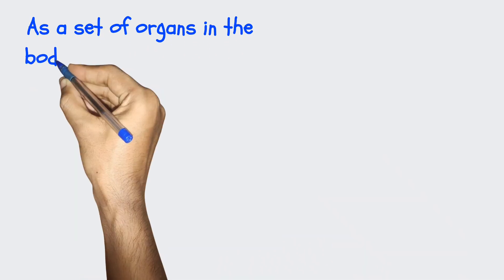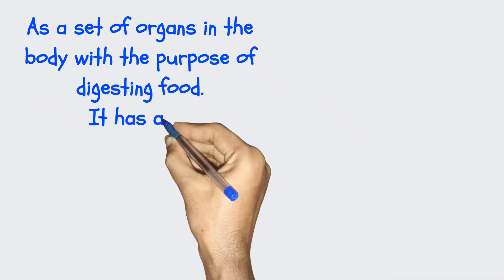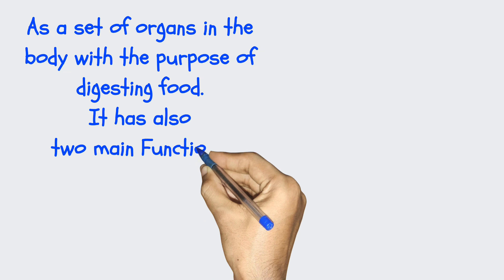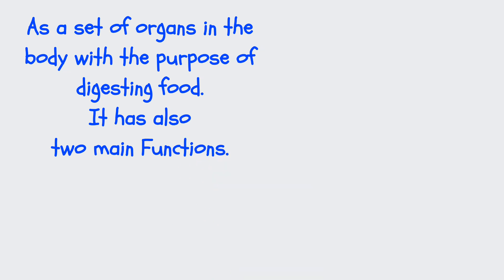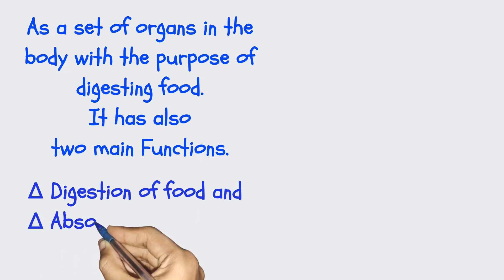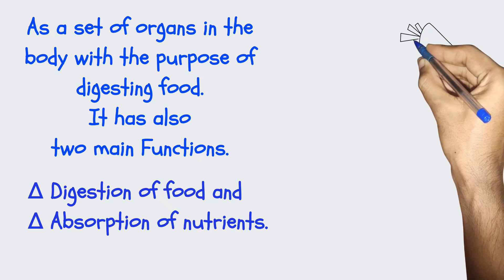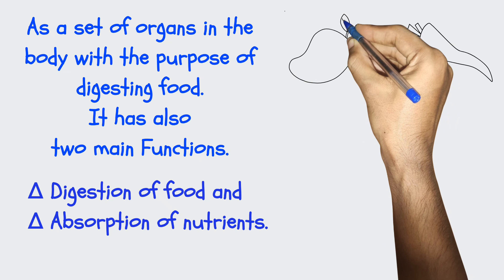As a set of organs in the body with the purpose of digesting food, this digestive system also has two main functions, which are digesting food and absorbing nutrients.